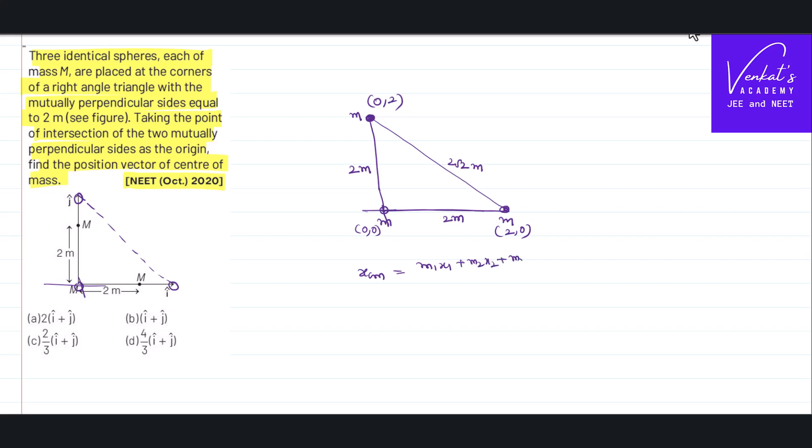m1 plus m2 plus m3 are all identical. So m·x1 is 0, m·x2 is 2, plus m·x3 is 0, divided by m1 plus m2 plus m3 which is m plus m plus m. This is 0, this is 0, the remaining answer is 2m by 3m, that is 2/3. That is x_cm.